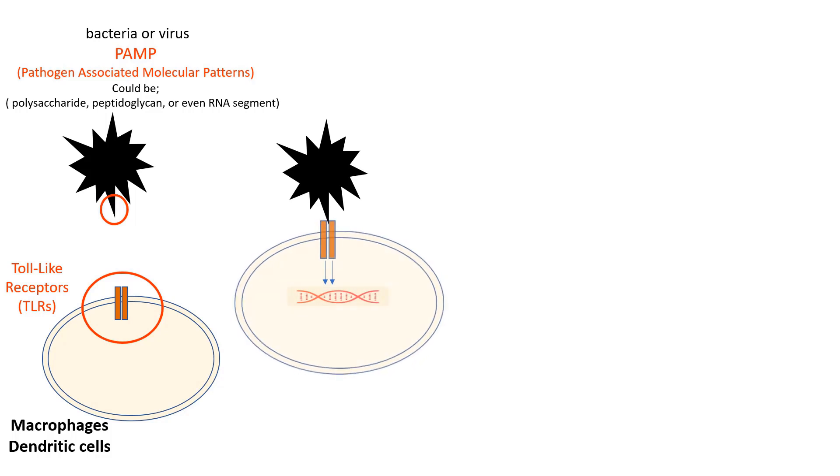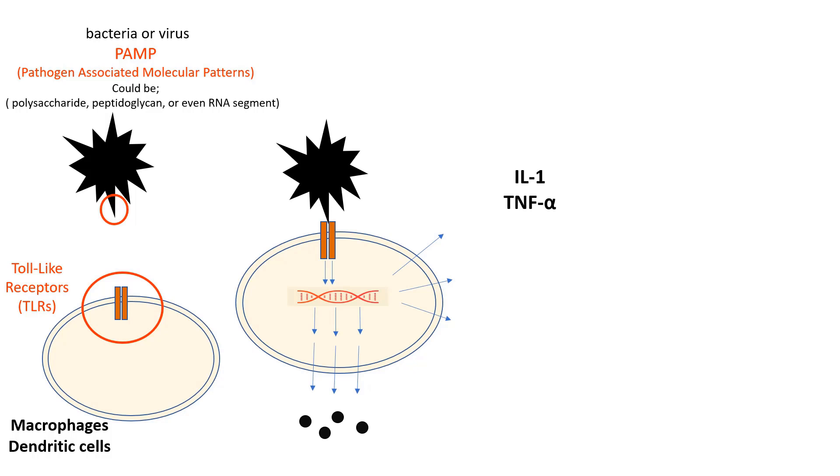This activation of toll-like receptors results in a cascade of intracellular reactions, which end with the production of various immunological and inflammatory mediators. These mediators include interleukin-1 (IL-1), tumor necrosis factor alpha (TNF-α), interferons, histamine, prostaglandin, leukotrienes, and last but not least, nitric oxide (NO).